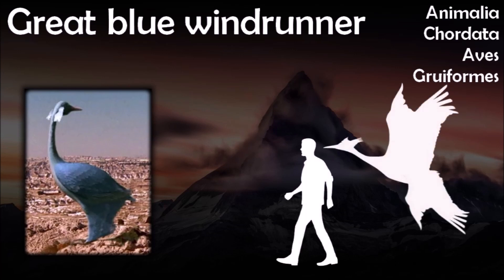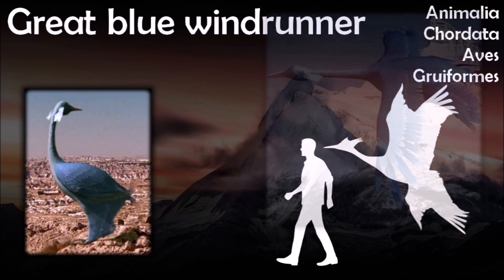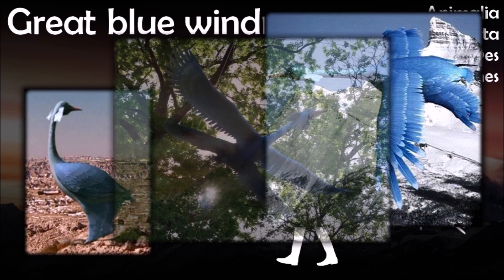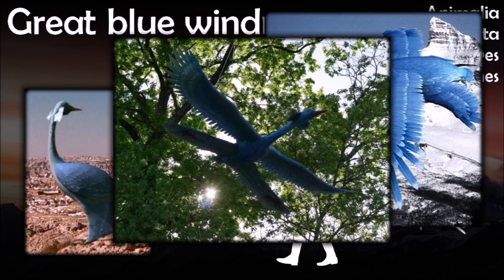The great blue windrunner is a large species of gruiform bird native to the lowland region south of the Great Plateau of 100 million AD. A descendant of the cranes, it is notable for having a second pair of wings in its hind legs. When Australia completed its continental drift colliding with Asia, much of the cranes' habitat was replaced by an enormous mountainous range. The crane abandoned its wetland marshes and rivers in favor of a migratory lifestyle, developing long narrow wings to cover larger distances.